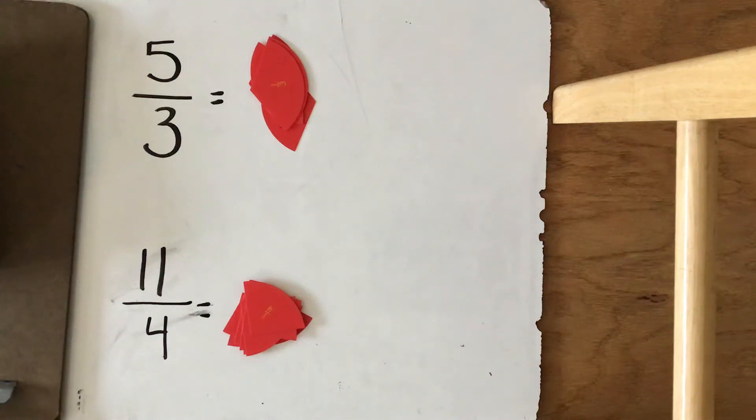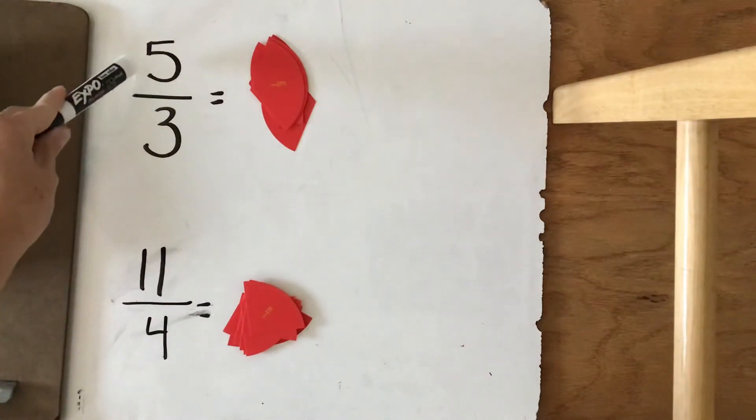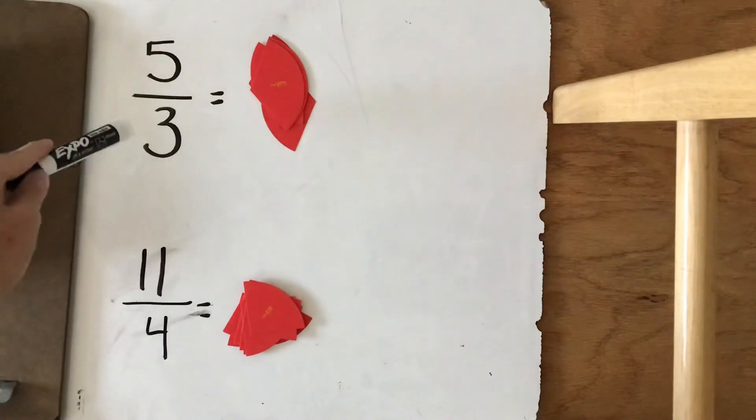I'm going to review with you in this video how to make an improper fraction. Remember, an improper fraction is when the numerator is higher than the denominator, and we want to turn these into mixed numbers. And I'll use my material to show you.